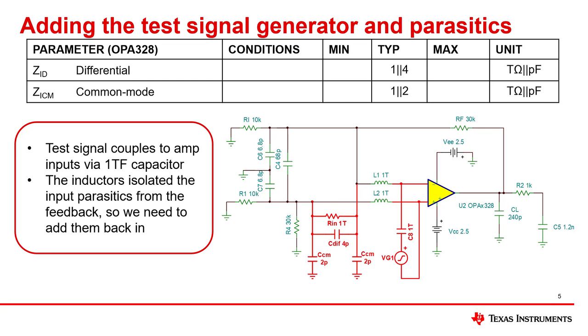The previous step isolated the feedback network from the input parasitic capacitance and impedance. The input capacitance can have an impact on the stability, so we have to account for these components in the analysis.